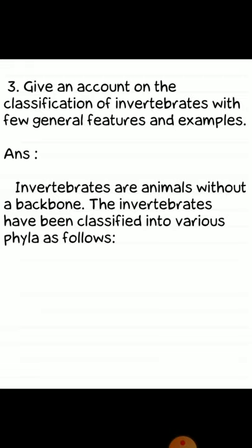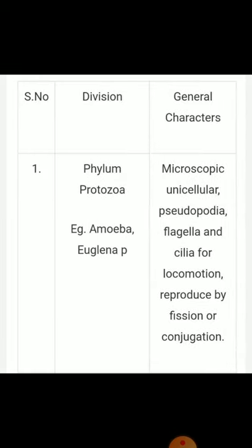Third question: give an account on the classification of invertebrates with general features and examples. Answer: invertebrates are animals without a backbone. The invertebrates have been classified into nine phyla. First phylum — Protozoa: examples: Amoeba, Euglena. General characters: microscopic, unicellular, pseudopodia, flagella and cilia for locomotion; reproduce by fission or conjugation.